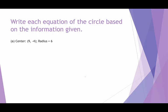Now for the next examples, we're going to write the equation of the circle based on information we're given. Here we're given both the center and the radius. The center is 9, negative 4, so h equals 9 and k equals negative 4. The radius is 6, so r squared is 36. Plugging into standard form: x minus 9 squared plus y plus 4 squared equals 36.